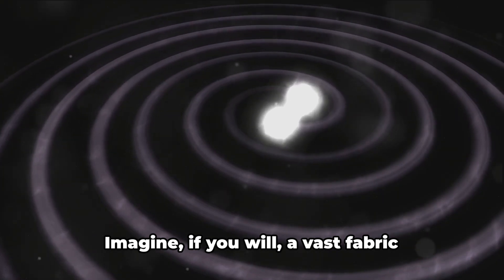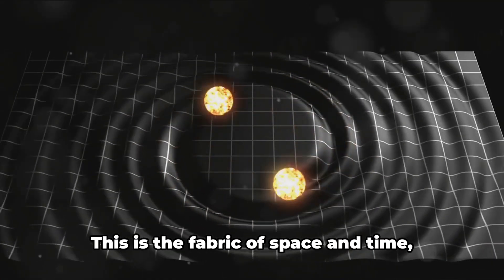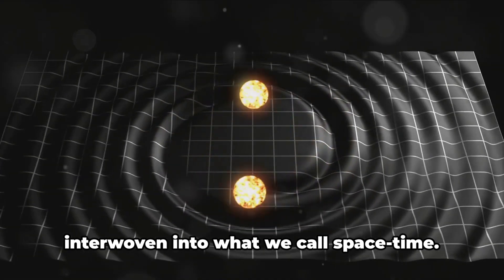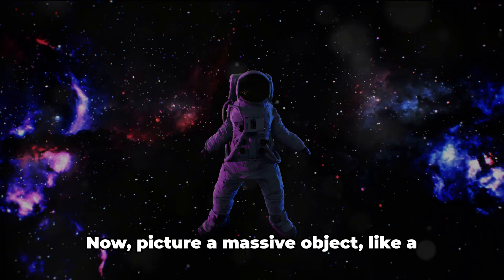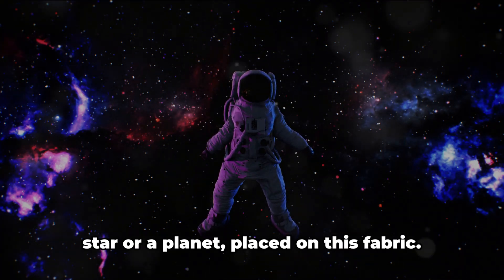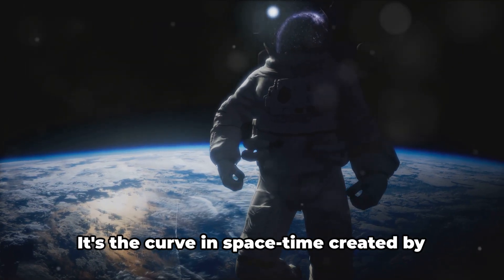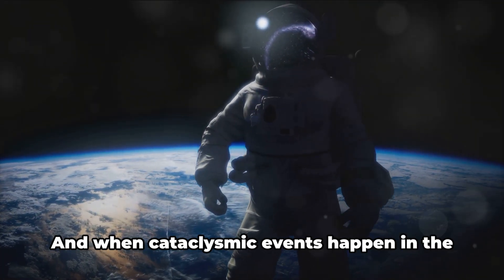Imagine a vast fabric stretched out in all directions. This is the fabric of space and time, interwoven into what we call space-time. Now, picture a massive object, like a star or a planet, placed on this fabric. It would create a dent, a distortion. This is gravity. It's the curve in space-time created by mass and energy.